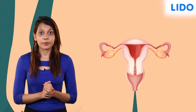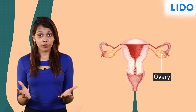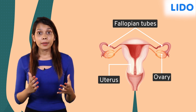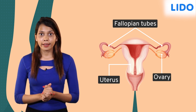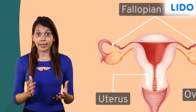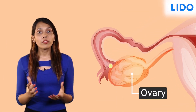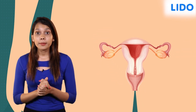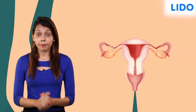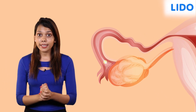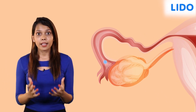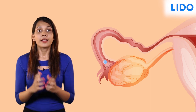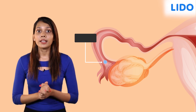Now let's look at the female reproductive system. It consists of a pair of ovaries, oviducts or fallopian tubes, and a uterus. The female gametes called ovum or egg are produced by the small almond-sized gland called the ovaries. Ovum is released from the ovary to the oviduct or fallopian tubes. When the male sperm meets the ovum in the fallopian tube, fertilization takes place. During this process, the nuclei of the sperm and egg fuse to form a single nucleus. This fertilized egg is called a zygote.